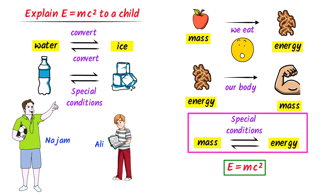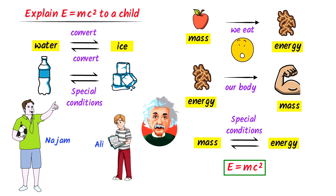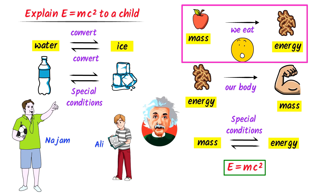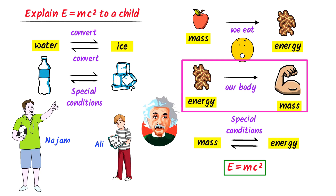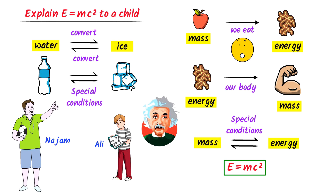This equation was presented by Einstein. So according to this equation, we can convert mass into energy and energy into mass. Remember that at normal conditions we cannot convert mass into energy and vice versa. We need special conditions for this conversion.